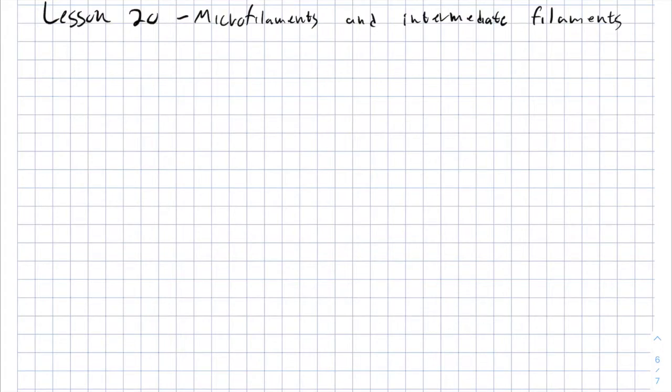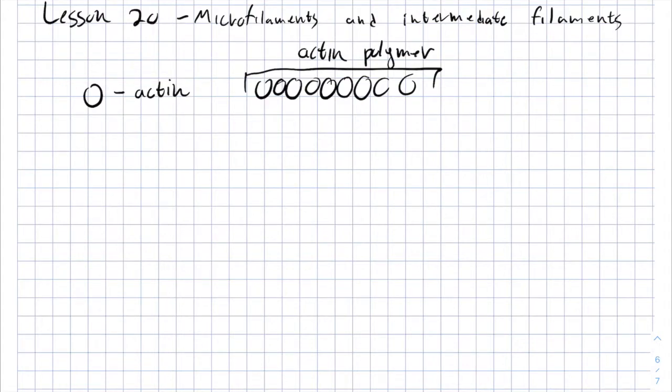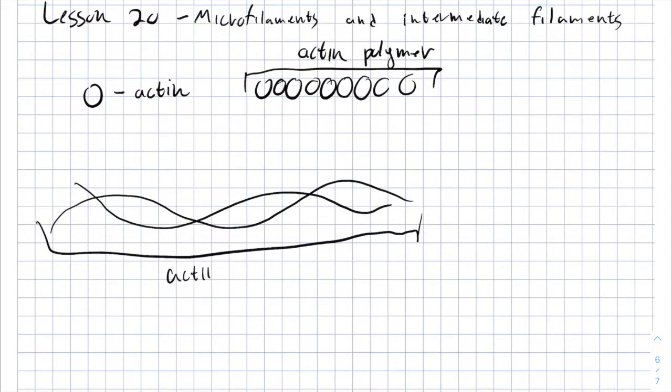Microfilaments are made from actin proteins. Actin proteins combine together in order to make polymers of actin. And many actin polymers combine together in order to twist with each other and to make actin filaments. The actin filaments are actually the microfilaments.